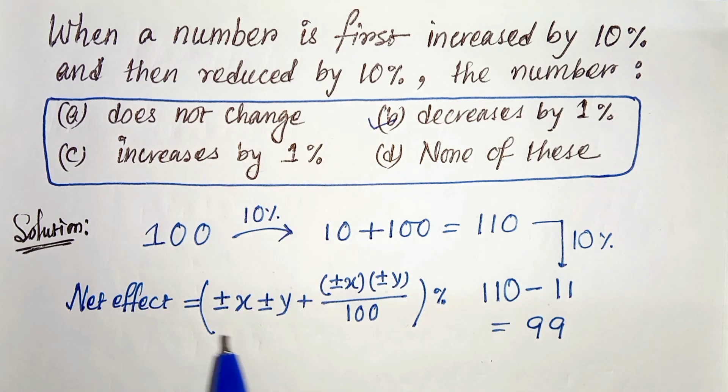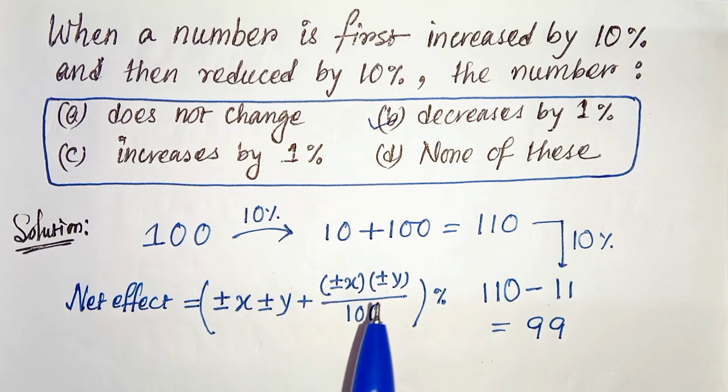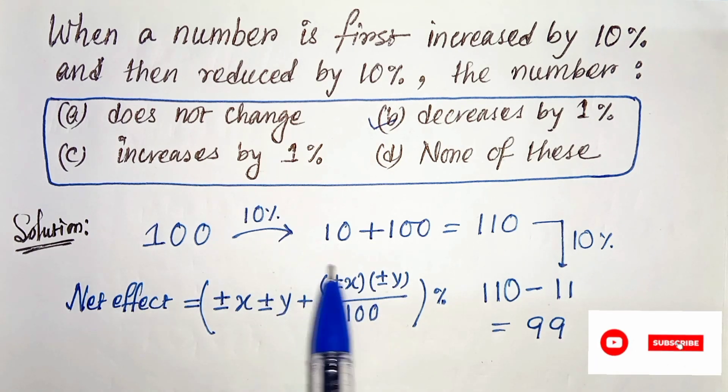Now we will solve it using a formula. So the formula is: if the value of an object is first changed by x percent and then changed by y percent, then the net effect becomes (±x ± y ± xy/100)%.